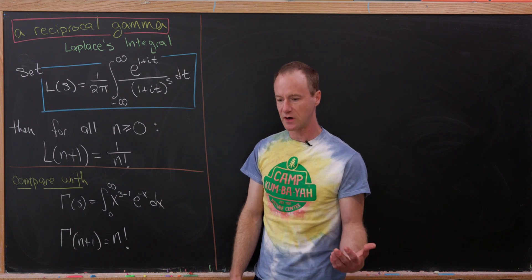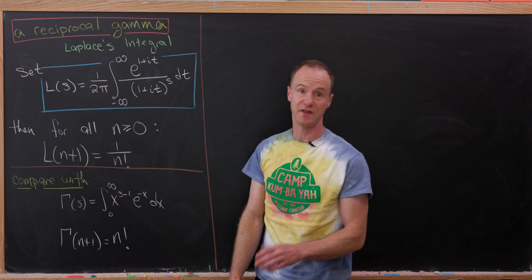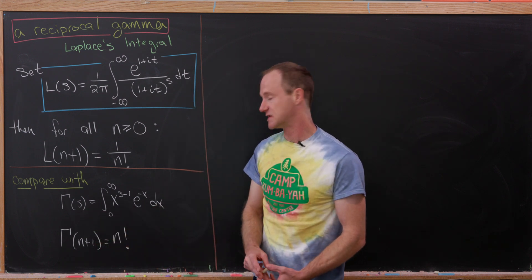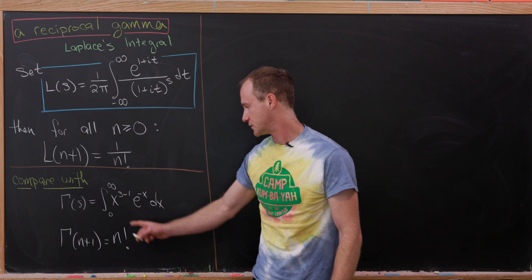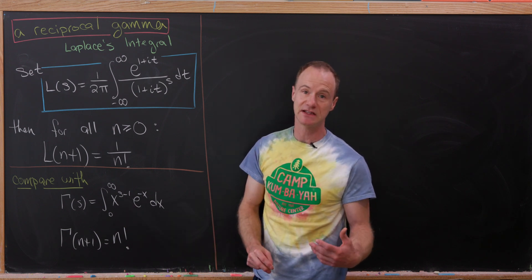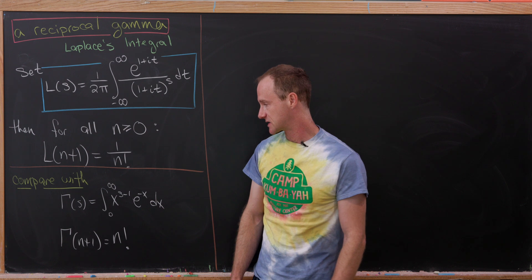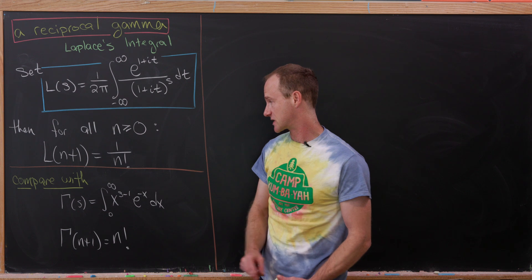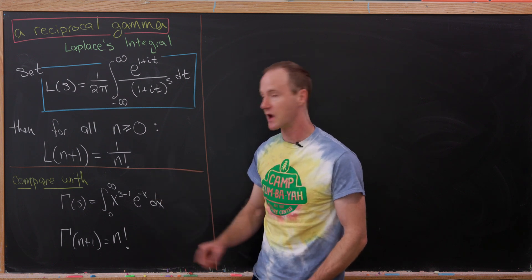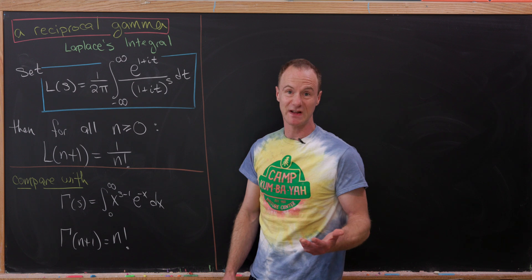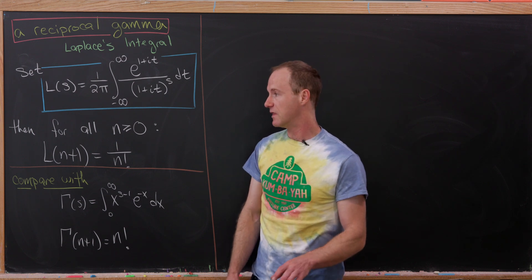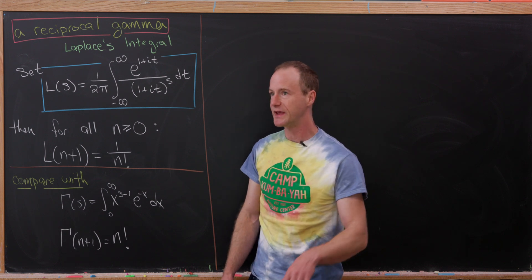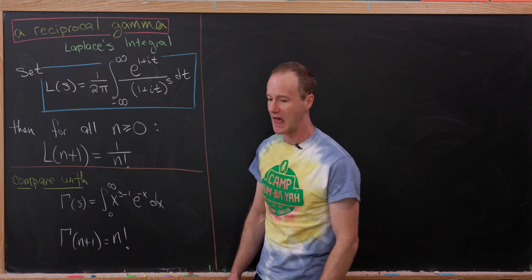Before we get started, let's compare this with the gamma function, which is much more well known. The gamma function is defined as gamma of s equals the integral from 0 to infinity of x to the s minus 1 times e to the minus x dx. You can show that gamma evaluated at n plus 1 is n factorial.